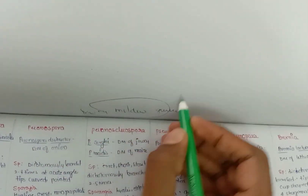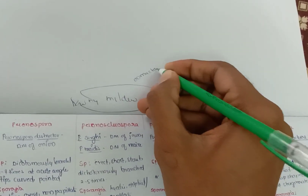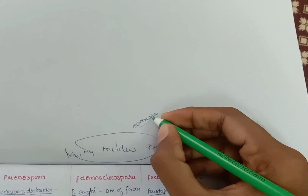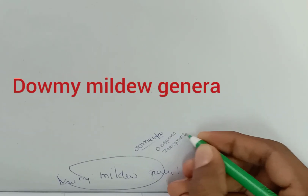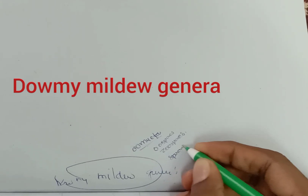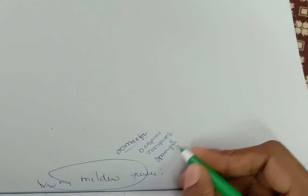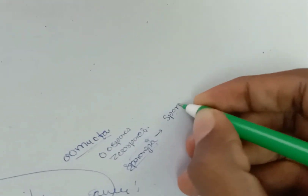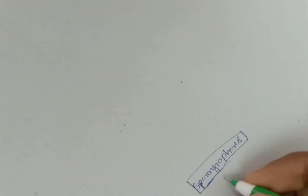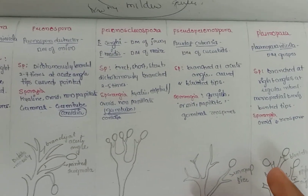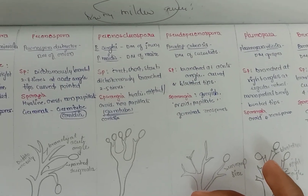Downy Mildew Genera belongs to lower fungi, that is Oomycota. Being lower fungi, it produces zoospores and sporangia. Based on how sporangia are produced upon the sporangiophore, the Downy Mildew Genera is classified into 6 genera. We are now going to discuss about each genus.